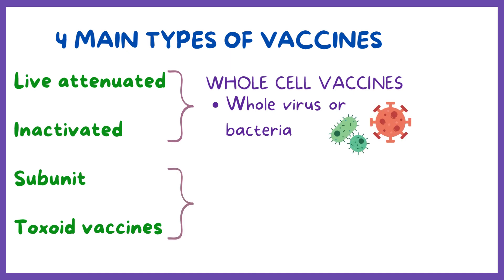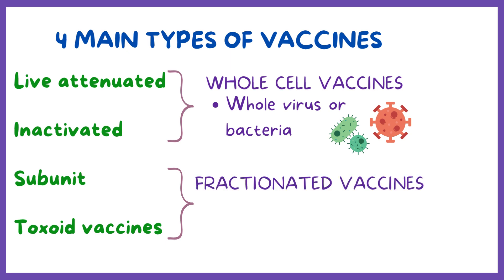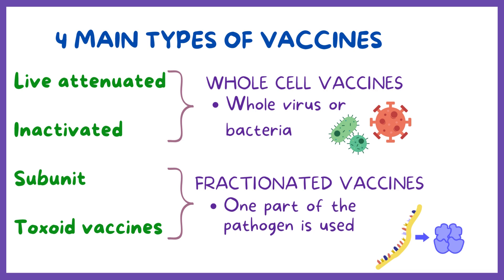Subunit vaccines, which includes polysaccharide vaccines, and toxoid are considered fractionated vaccines because only one part of the pathogen is used to create the vaccine.